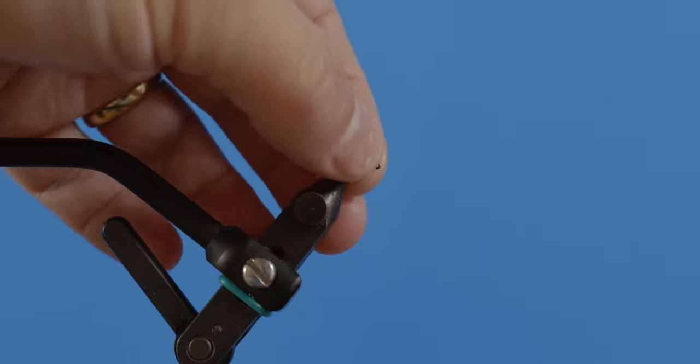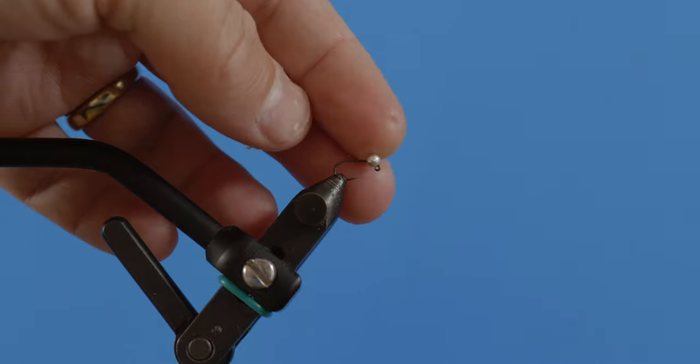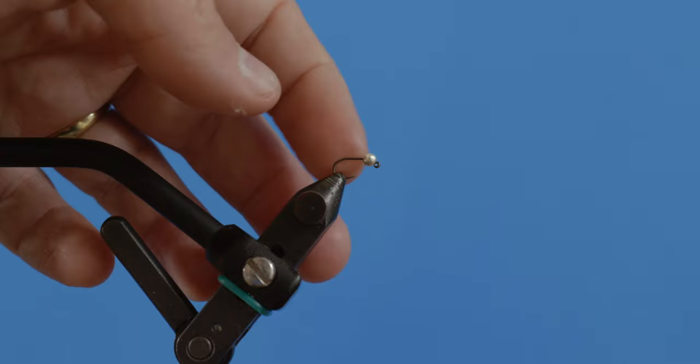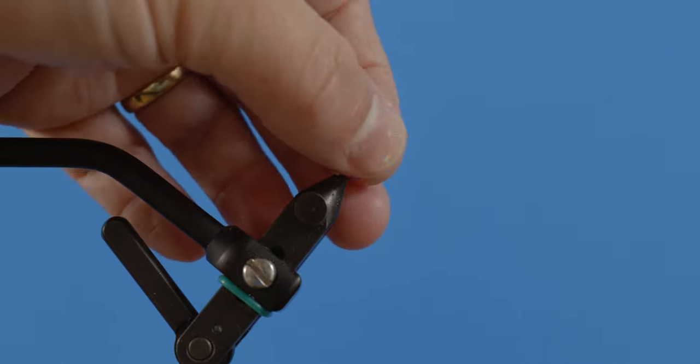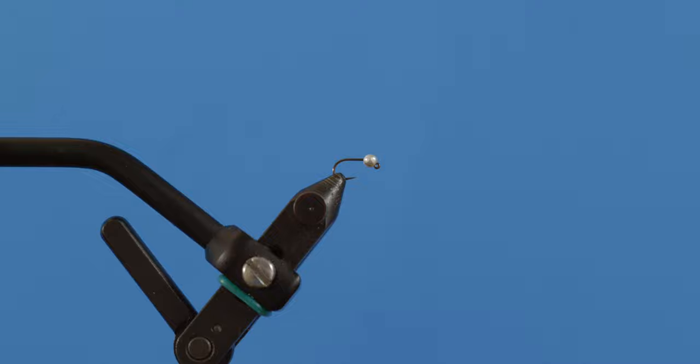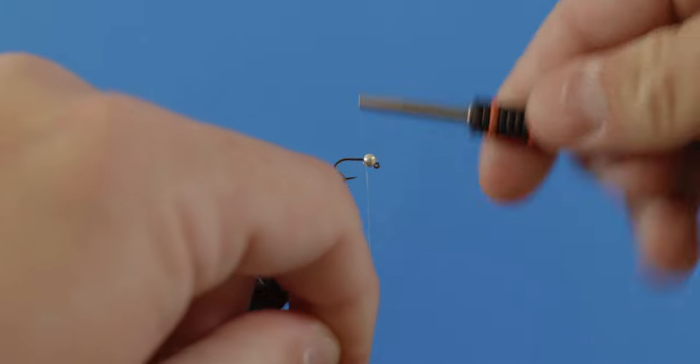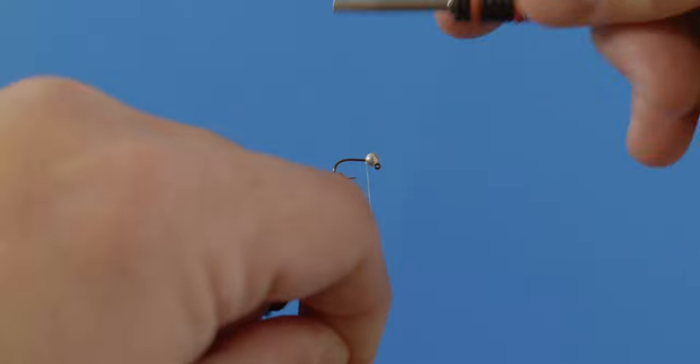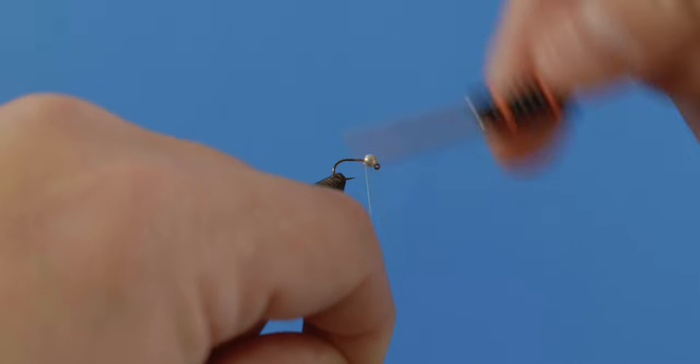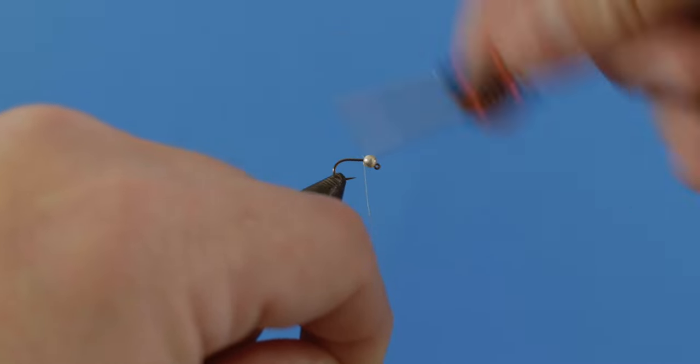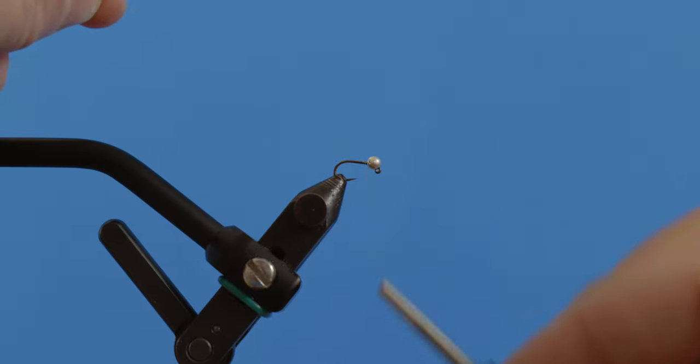Different material for the body and then a CDC hackle. The reason I've done this is that the France fly tends to fall apart fairly easily, so I wanted to adapt that fly because I really think it's an effective pattern, but it will fall apart pretty easily even if you super glue it.